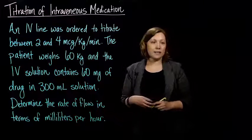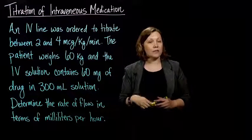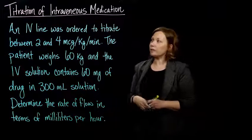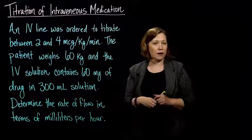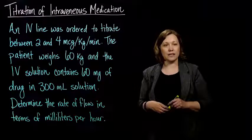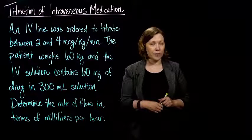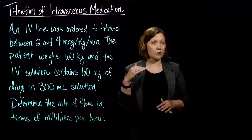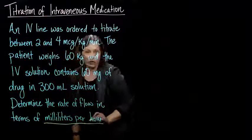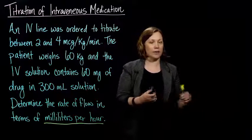What happens is we end up with a range of values that's been ordered — a lower value and a higher value — and we need to figure out the correct dosage based on that range for our particular patient. We want to determine the rate of flow in terms of milliliters per hour, specifically a lower limit and an upper limit in milliliters per hour.